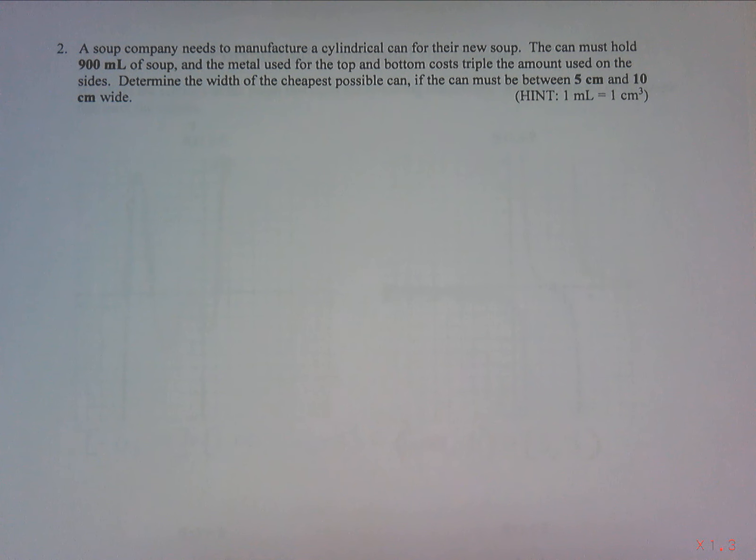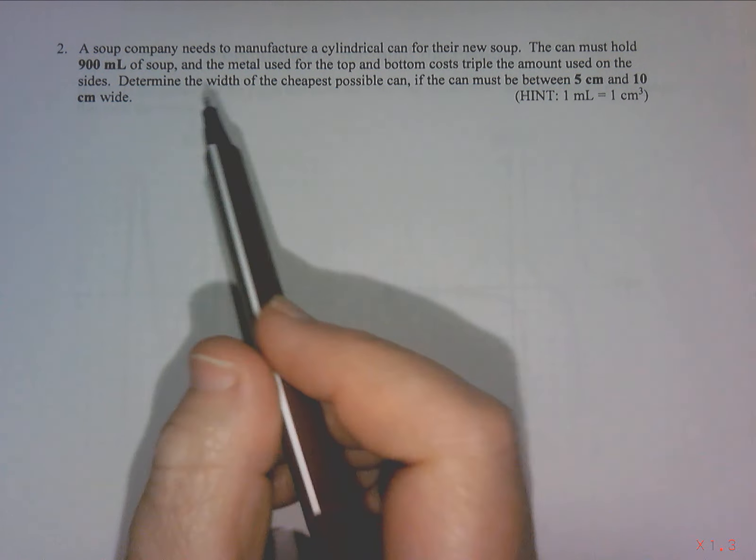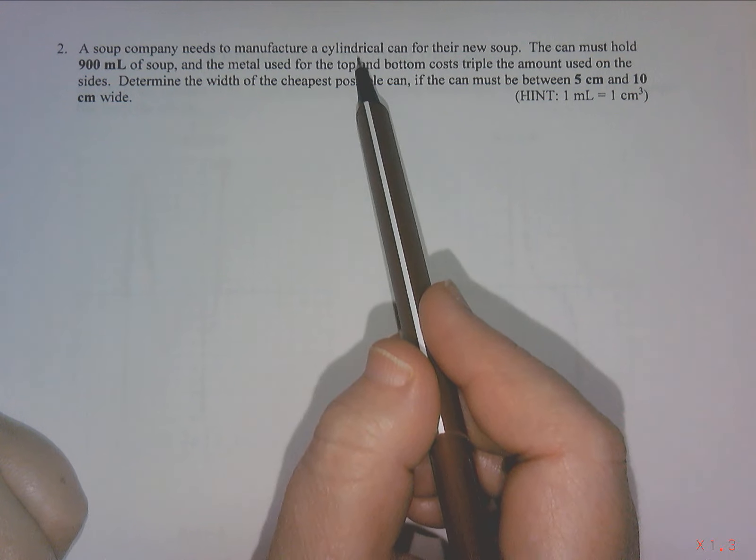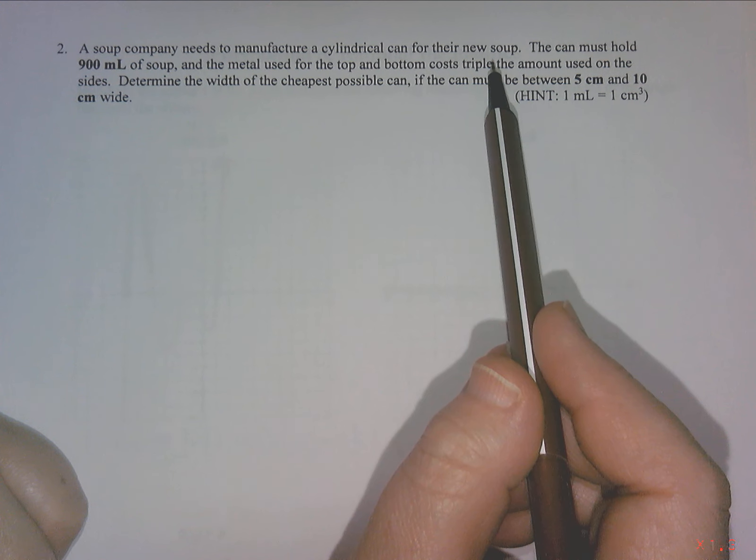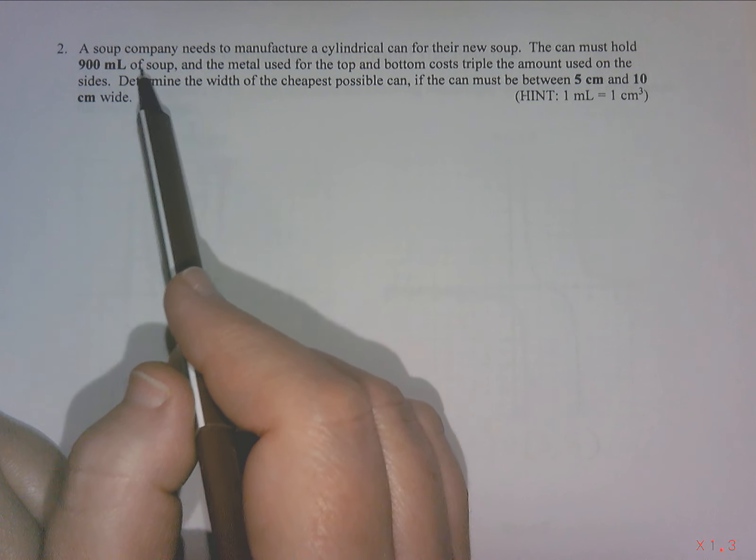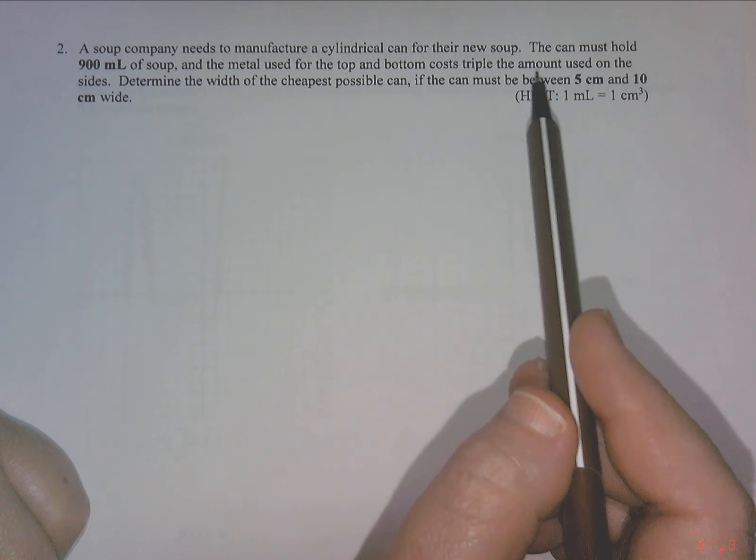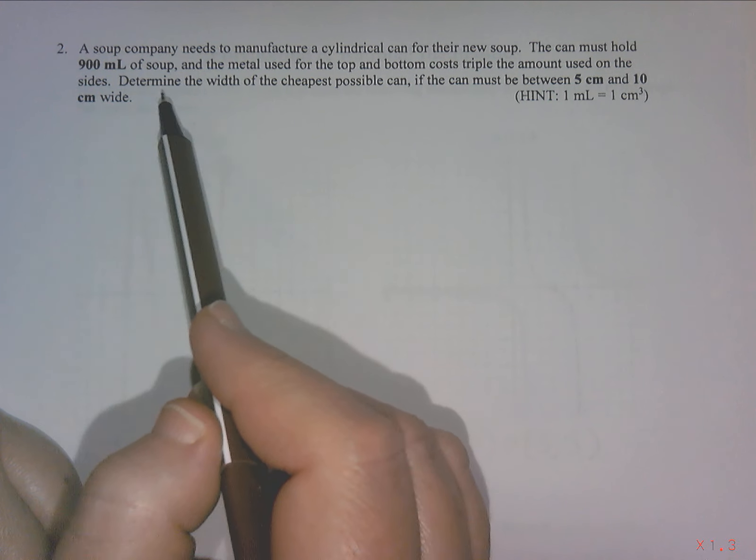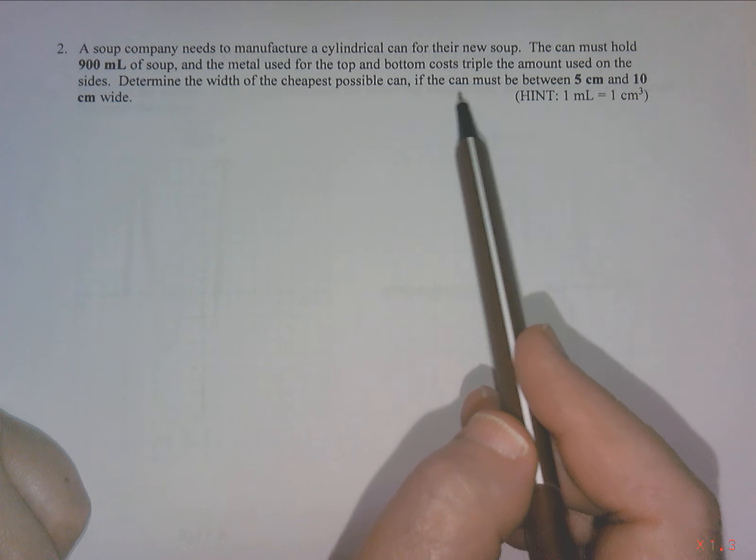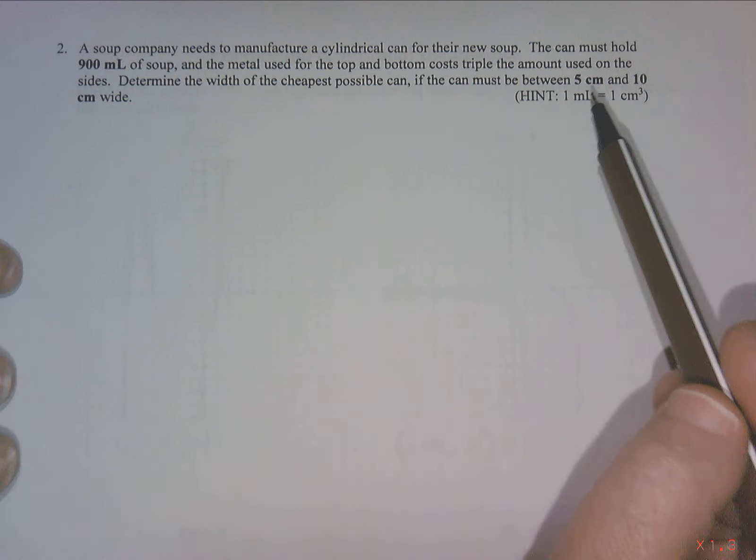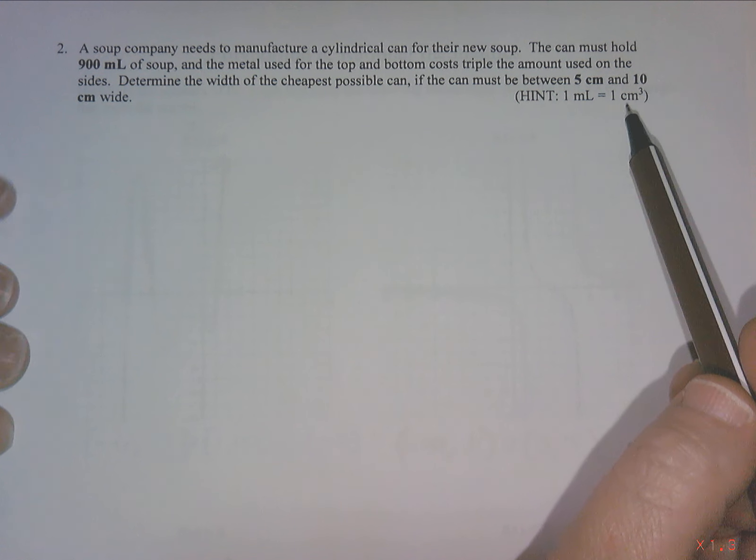This is part two of our lesson on optimization cost by parts. Our question says a soup company needs to manufacture a cylindrical can for their new soup. The can must hold 900 milliliters of soup, and the metal used for the top and bottom costs triple the amount used on the sides.